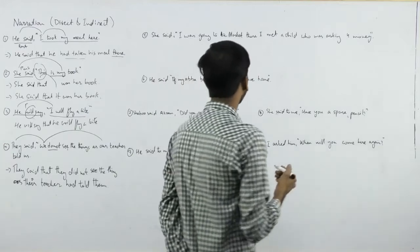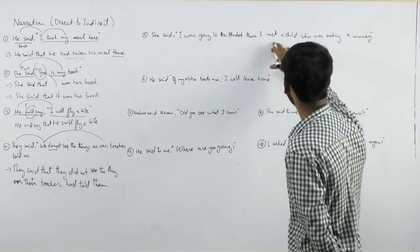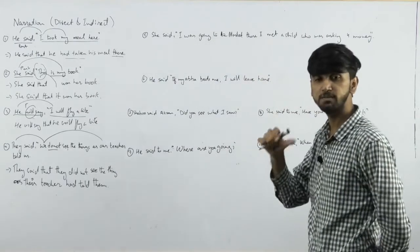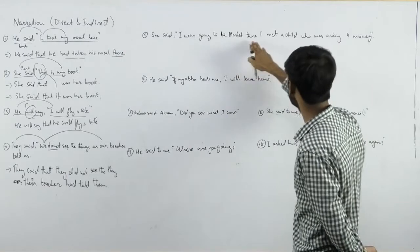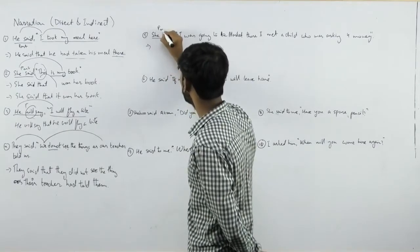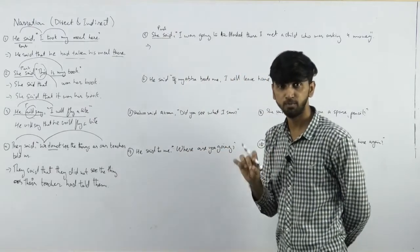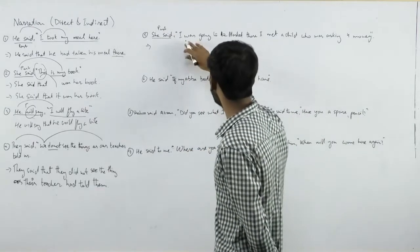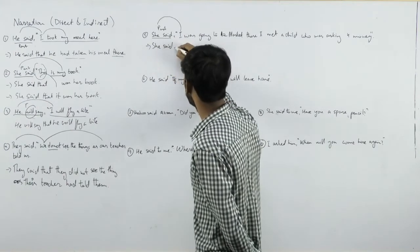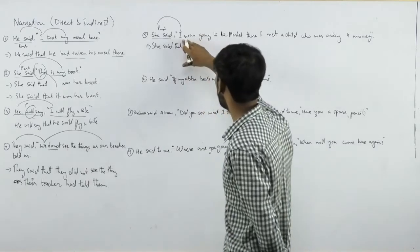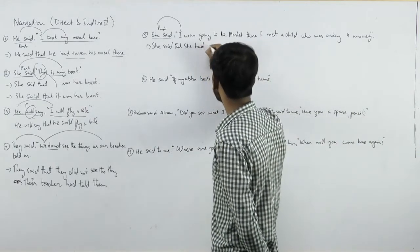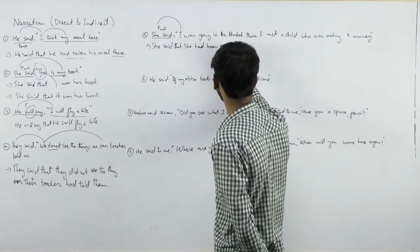She said, 'I was going to the market where I met a child who was asking for money.' Here we have two or three sentences and every sentence has to be changed. Past continuous 'I was going' changes to past perfect continuous: she said that she had been going to the market.